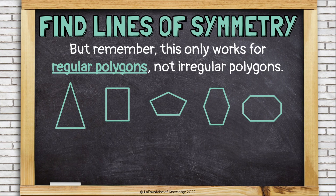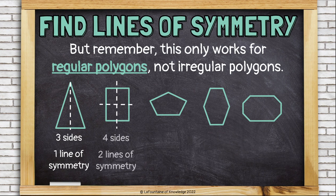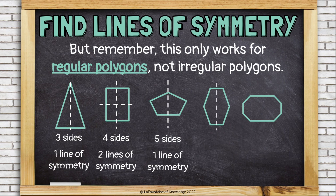It won't work for irregular polygons. This irregular triangle actually only has one line of symmetry, even though it has three sides. A rectangle has four sides but only two lines of symmetry. This stretched-out pentagon has five sides but only one line of symmetry. This hexagon has six sides but only two lines of symmetry, and this octagon with eight sides also only has two lines of symmetry.